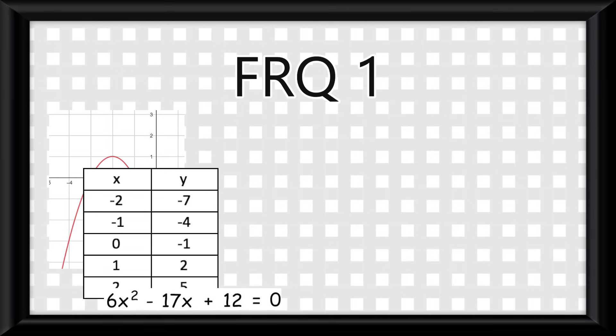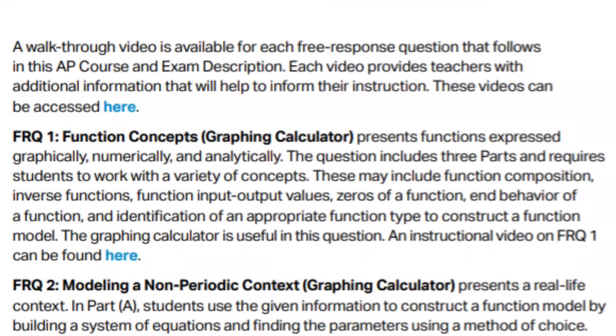This is one of the FRQs that requires you to have a graphing calculator. For this FRQ, the question will start out by giving you either a graph, table, or equation. Then it will give you three parts to solve for this graph, table, or equation, and it will ask you questions on them. And in case you're wondering, yes, we do know what these questions will be. They could be chosen from six topics.